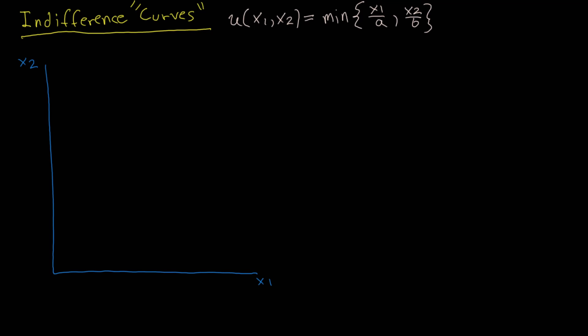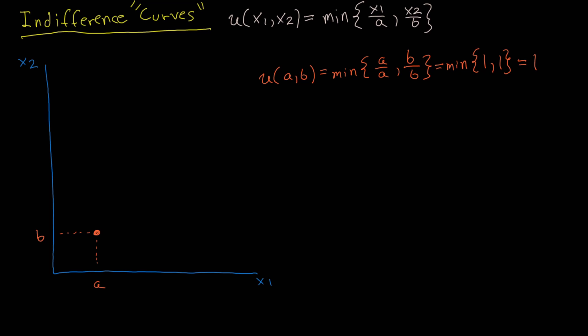Now let's go over the indifference curves for perfect complements. To illustrate them, I'm going to pick a bundle equal to x1 at a and x2 at b. Evaluating the utility function at this bundle: u(a, b) equals the minimum of a over a and b over b. The a's and b's cancel, leaving the minimum between 1 and 1, which is obviously just 1. So at bundle (a, b), the utility function equals 1.